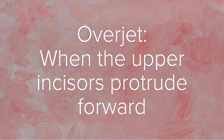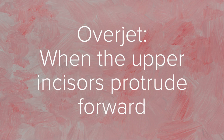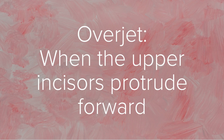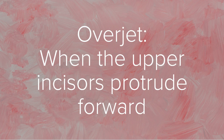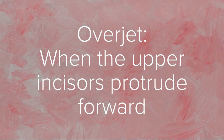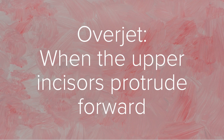Now, you might be asking, what is an overjet? Overjet is when the upper incisors protrude forward — so they protrude forward in class 2, division 1 and division 2. And they protrude backward in class 3 incisor relation. That's why in class 3, it is a reverse overjet — so it is the opposite.